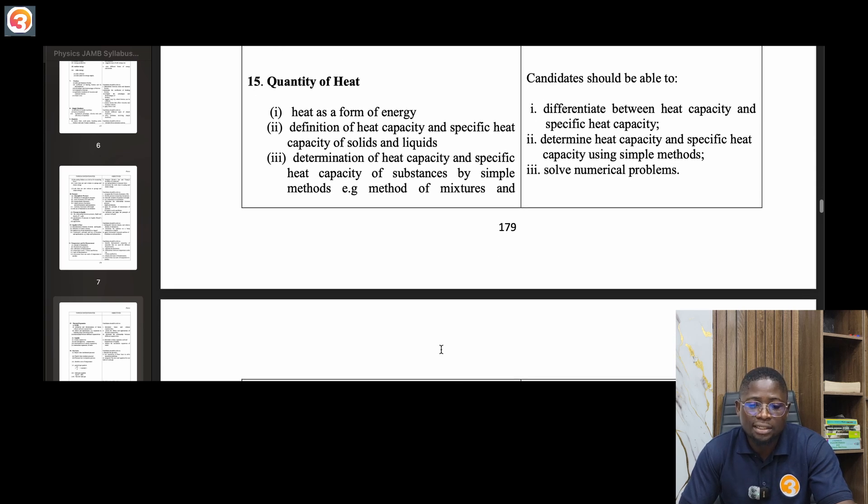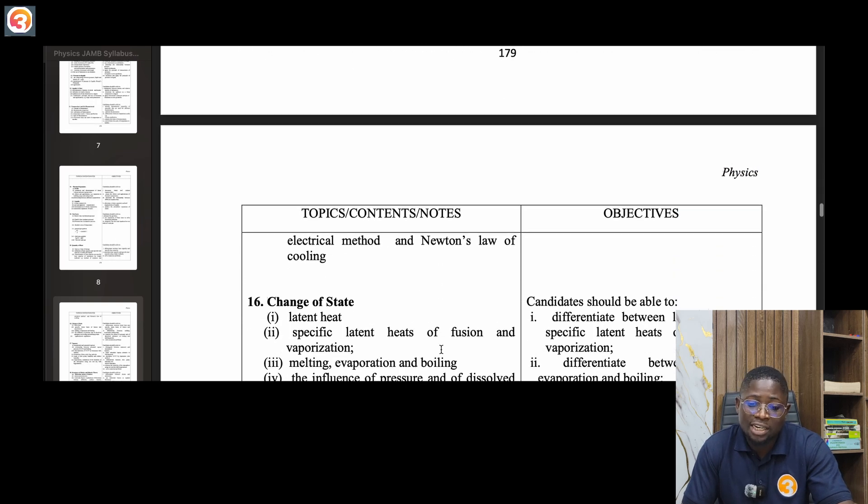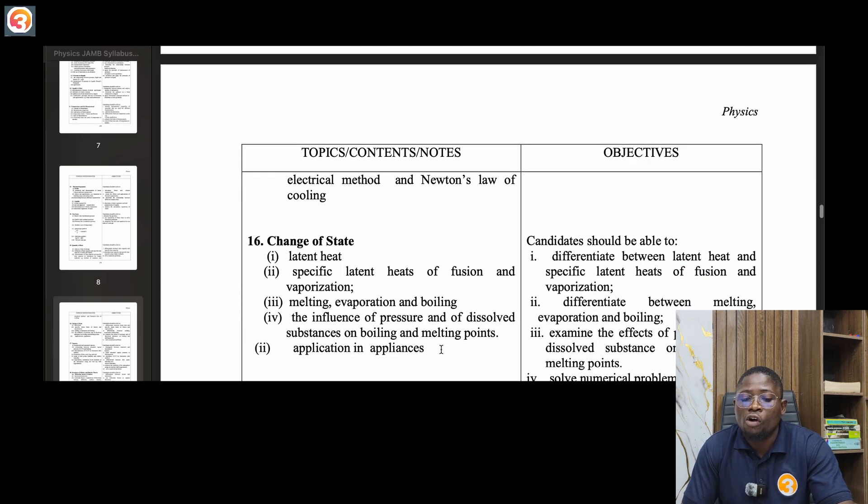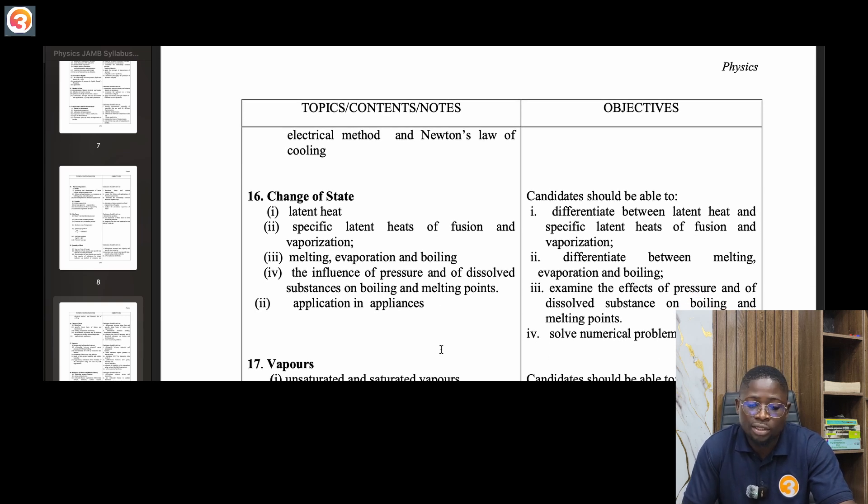Fifteen, quantity of heat as a form of energy. Definition of heat capacity and specific heat capacity of solids and liquids, determination of heat capacity and specific capacity of substances by simple methods, e.g. method of mixtures and electrical method, and Newton's law of cooling. Newton's law of cooling is very important, do not joke with that part.